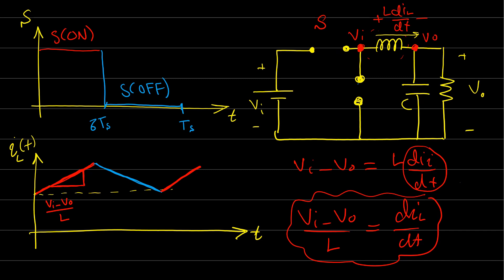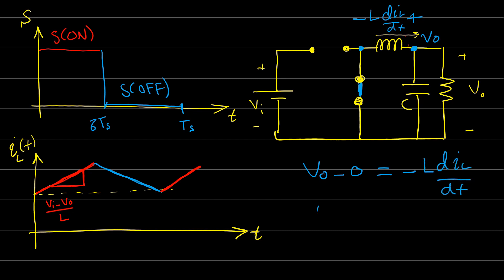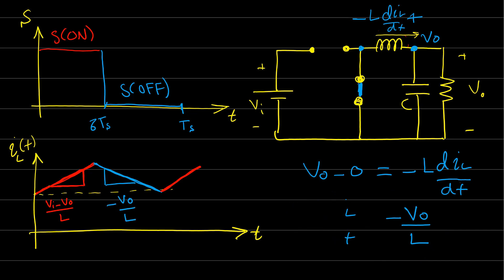When the switch is off, the diode is conducting, and the voltage applied on the inductor side connects to ground, so the voltage equation is L·dil/dt = −Vout. Therefore dil/dt = −Vout / L. From this equation we can find the negative slope of the inductor current when the switch is off, which is −Vout / L.